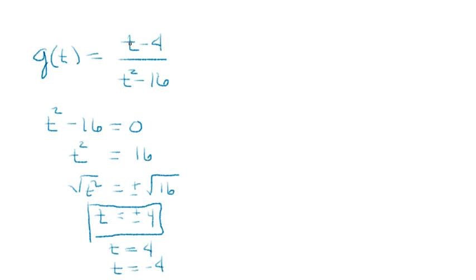If we plug negative 4 into the numerator, we get negative 8. Plug negative 4 into the denominator, we get 0. So negative 8 over 0 is a vertical asymptote. You can only have 0 in the denominator. So we cancel out t equals 4 because it doesn't work. The vertical asymptote is t equals negative 4.